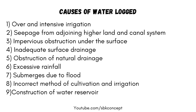Causes of Waterlogging: Over and intensive irrigation. Seepage from adjoining higher land and canal system. Impervious obstruction under the surface. Inadequate surface drainage. Obstruction of natural drainage. Excessive rainfall. Submergence due to flood. Incorrect method of cultivation and irrigation. Construction of water reservoir.